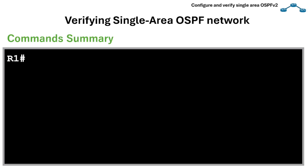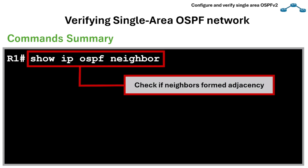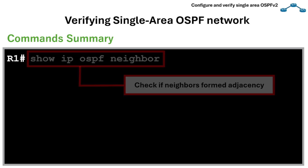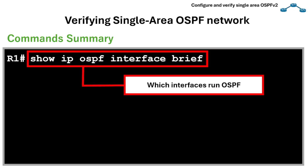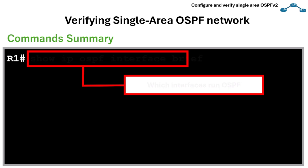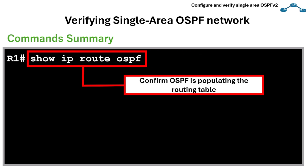For a quick summary: we use show ip ospf neighbor to check if neighbors form adjacency and look for the full state. We use show ip ospf interface brief to see which interfaces run OSPF, their area, cost, and state. And we use show ip route ospf to confirm OSPF is populating the routing table with learned routes.